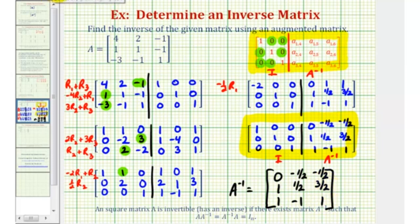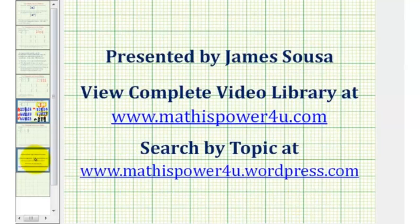And now that we have the inverse, we know that A times A-inverse equals A-inverse times A, which is equal to a 3 by 3 identity matrix. I hope you found this helpful. Thank you.